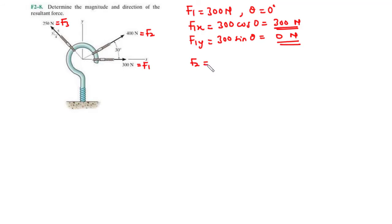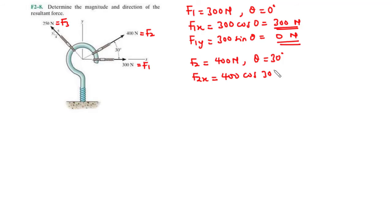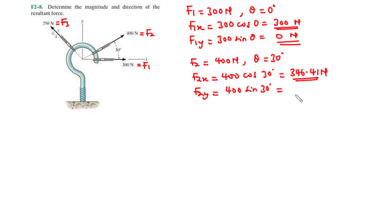For F2 at 400 N, the angle between F2 and the positive x-axis is 30 degrees. So theta = 30°. F2x = 400·cos(30°) = 346.41 N, and F2y = 400·sin(30°) = 200 N.